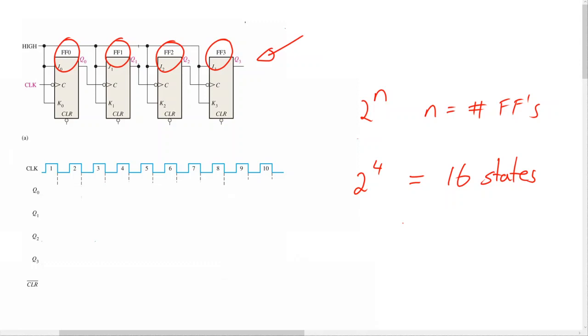To obtain a truncated sequence, it is necessary to force the counter to recycle before going through all of its possible states. In the example that we have here, the total number of states is 16. We want to however reduce that number to 10 states only.